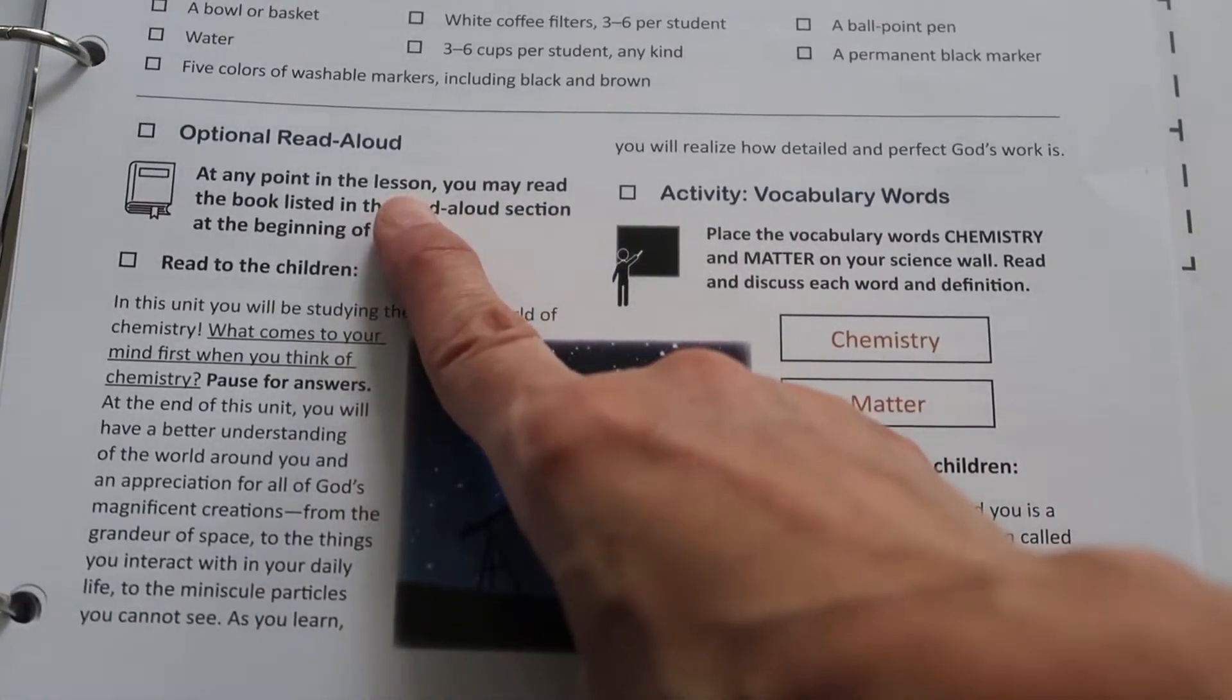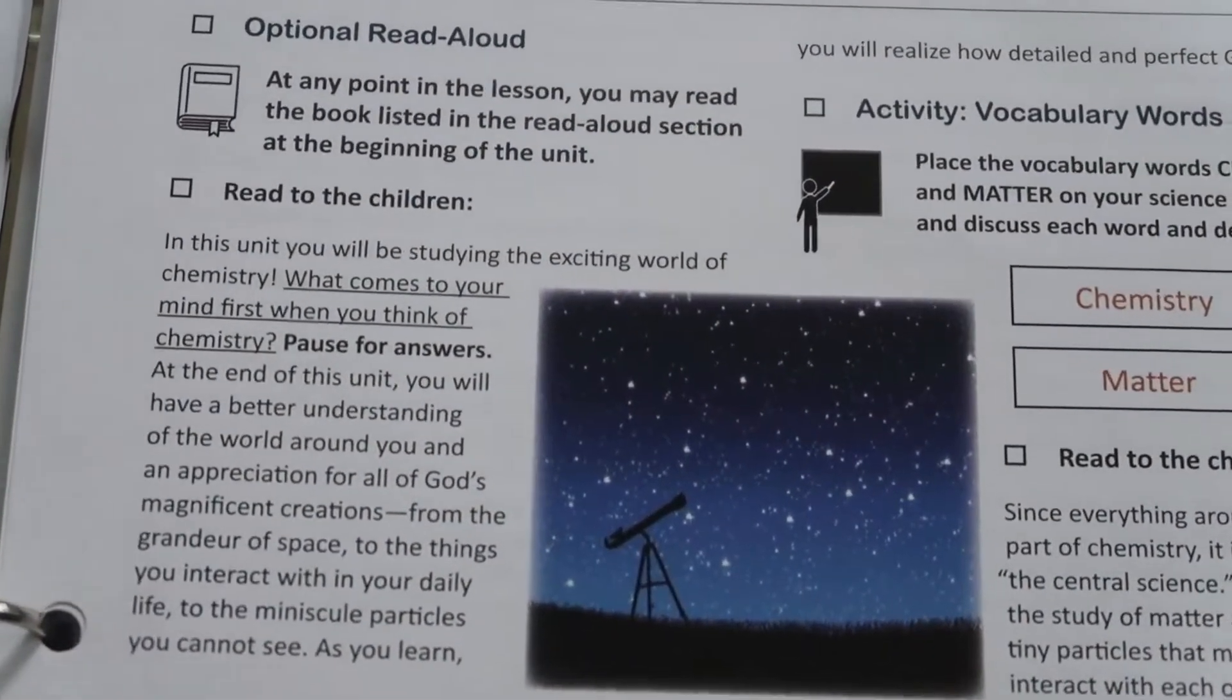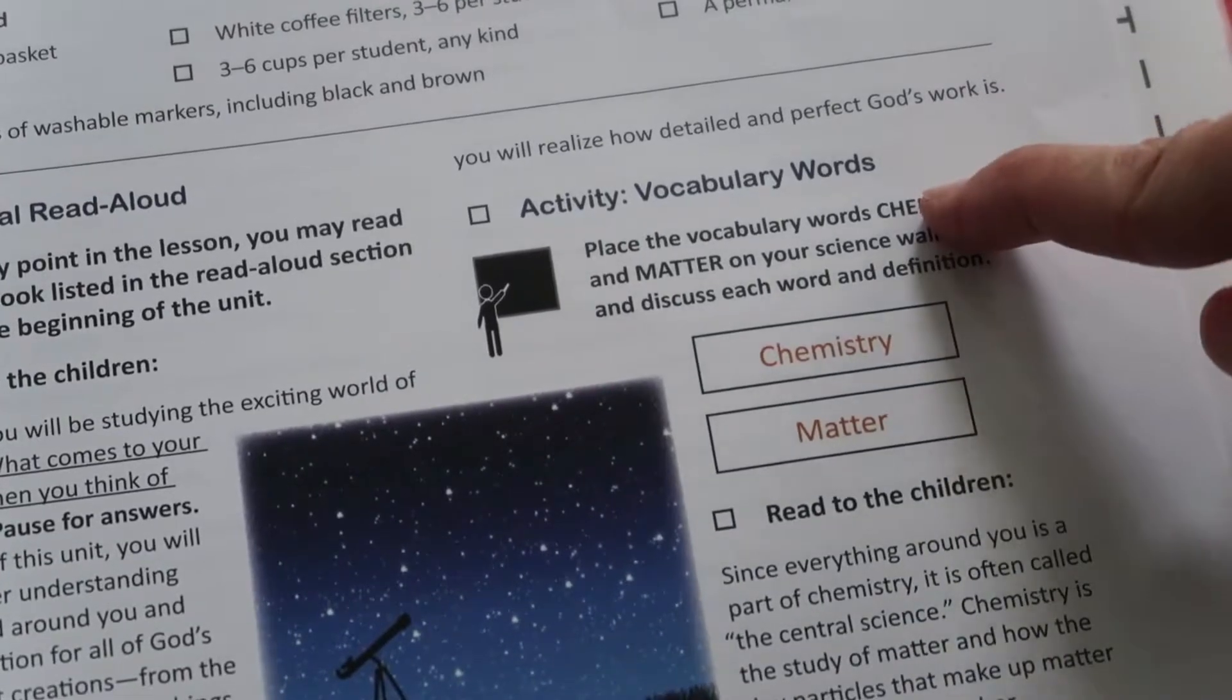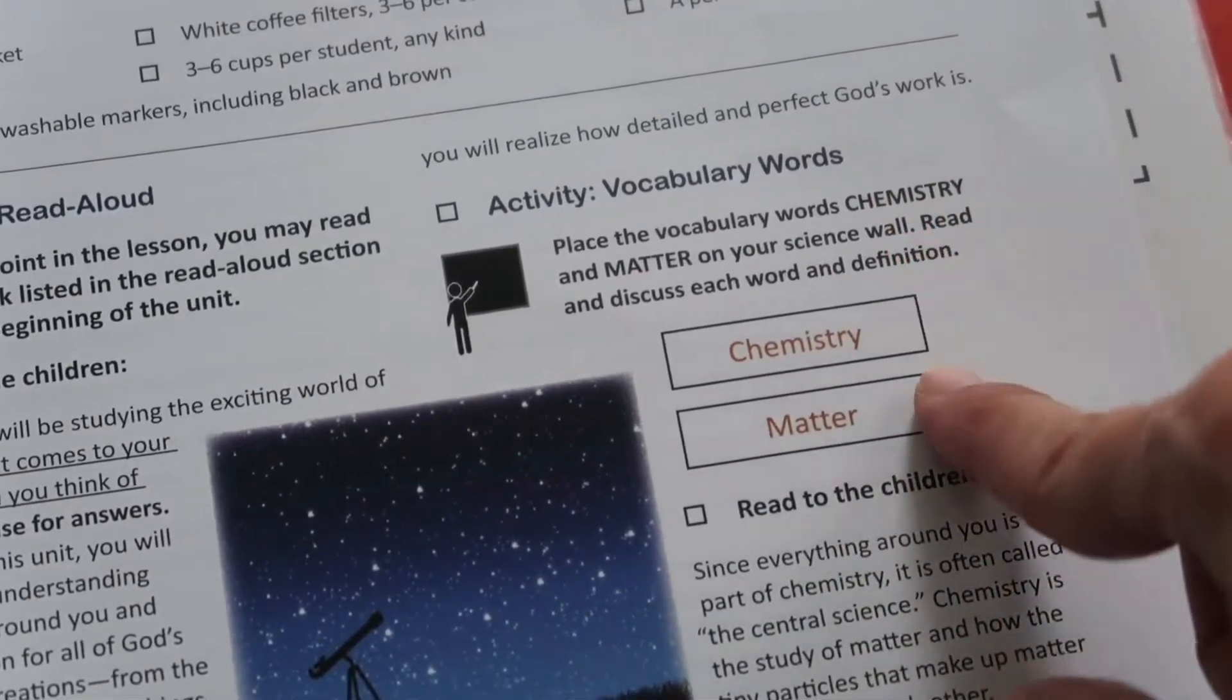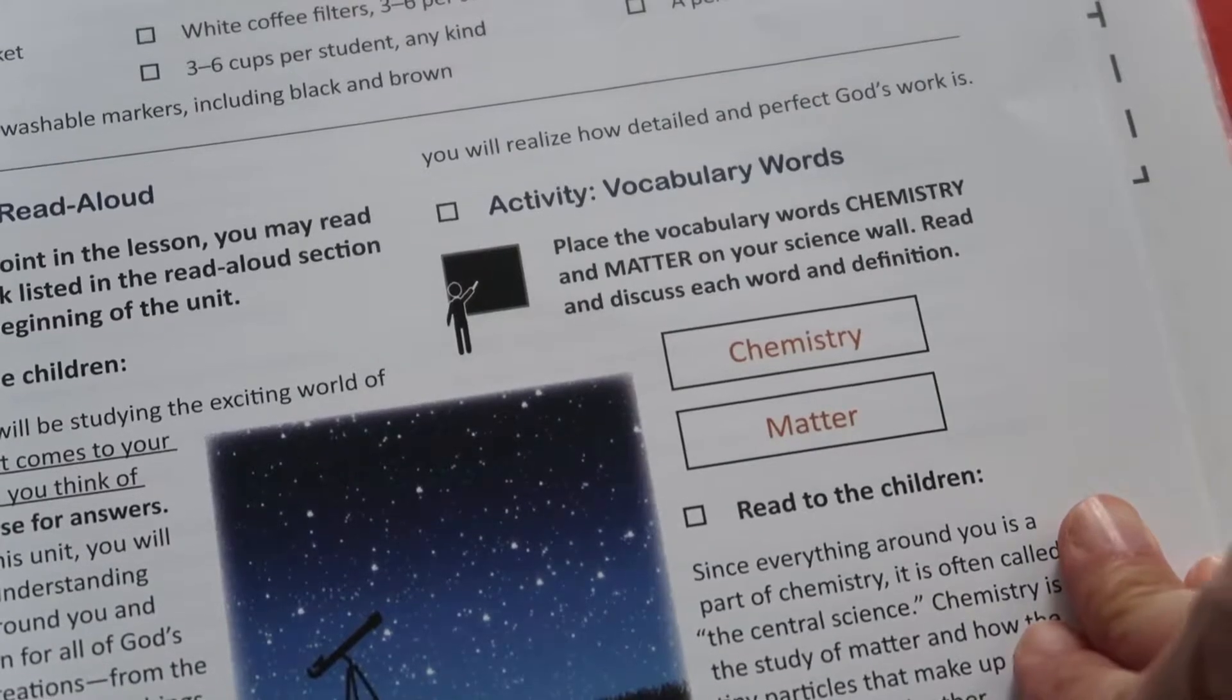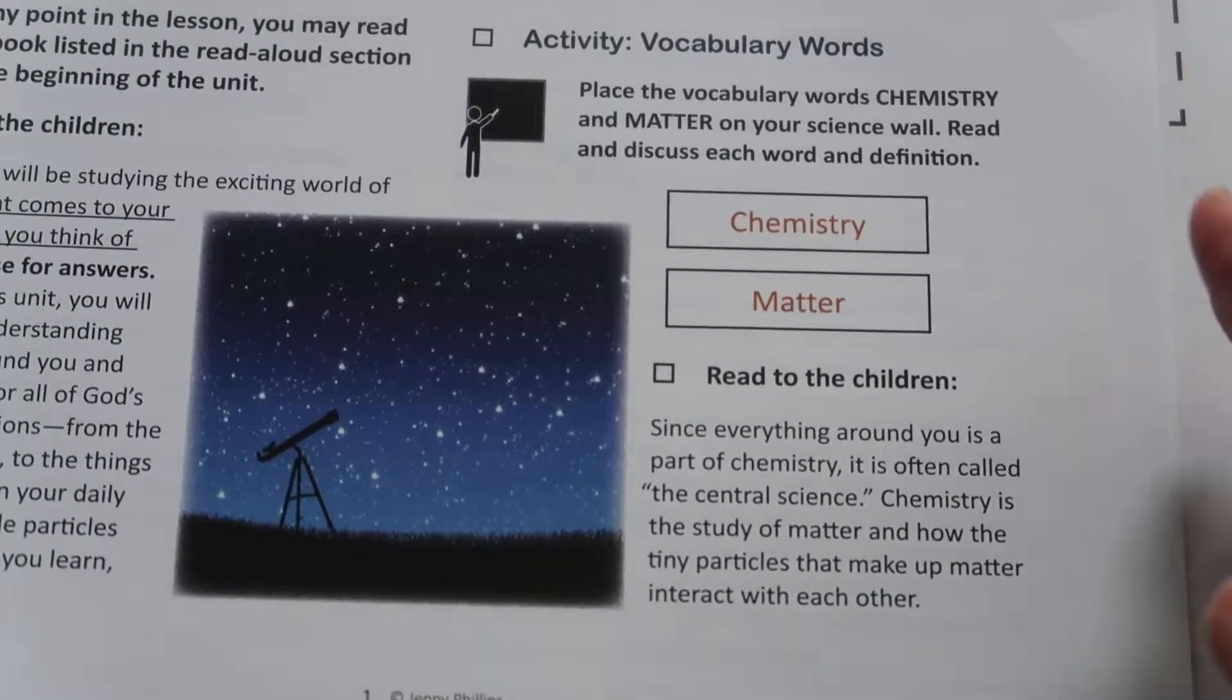You have time to do an optional read-aloud, and then it tells you exactly what to read to the children, when to pause for answers, and what the answers could be. You also have your vocabulary words, it gives you the words to put up on your wall, and it asks you to put it up at that time. I like to put all of mine up on the wall in the beginning, before I even start the lesson, and then I just have my children look up at the science wall and read me the definitions. That way my science wall is pretty from lesson one.